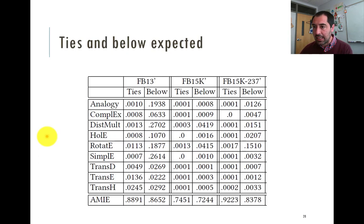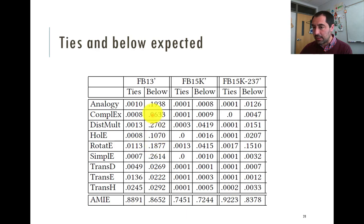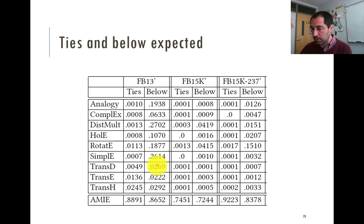We also analyzed ties and scores below expected — basically worse than random. Amy has many ties, especially because of how scores are computed. For the other models, ties are almost non-existent. For ranks below expected, in some models there is a certain percentage of positive triples ranked worse than random, but in the Trans models this percentage is very low — around 2 to 3%, which is generally pretty good.